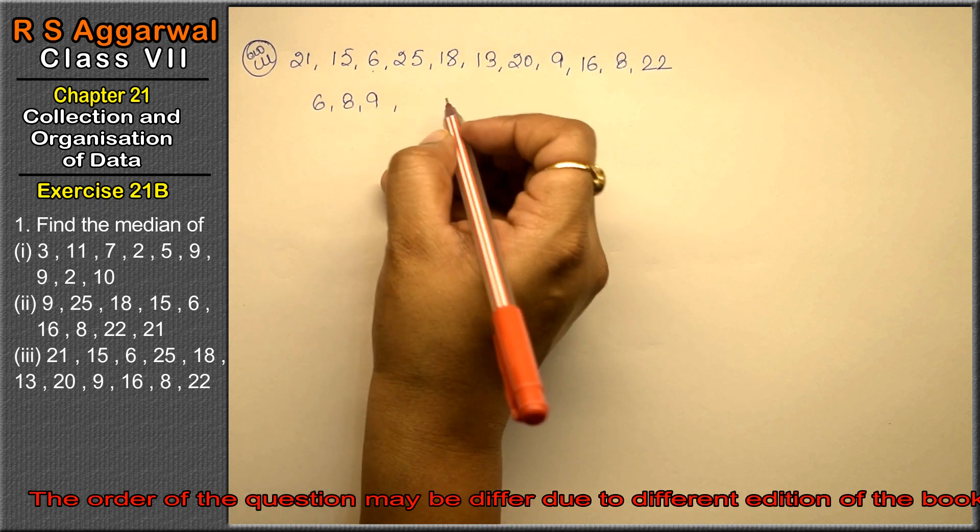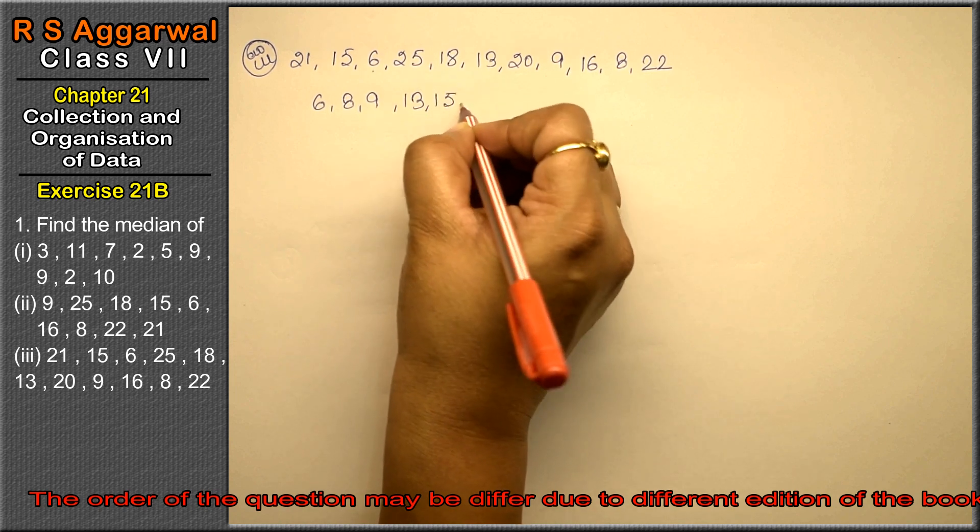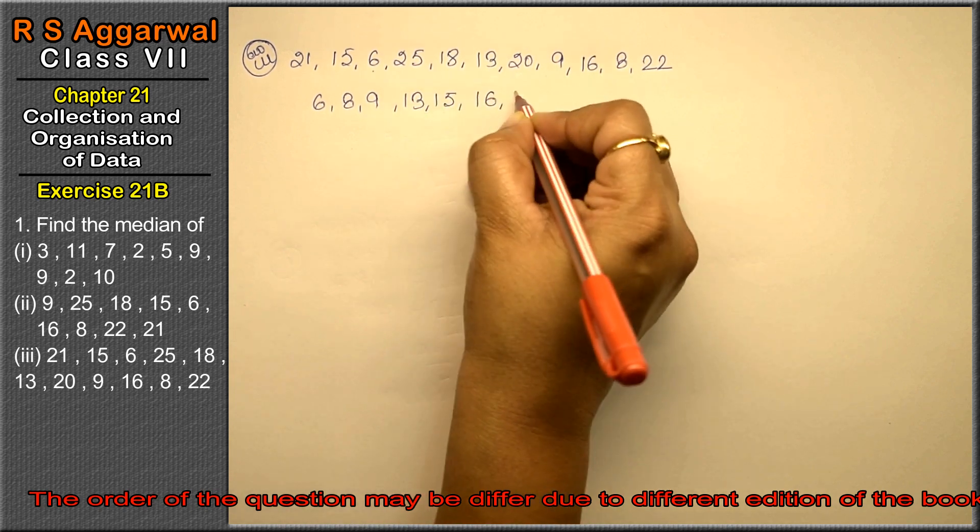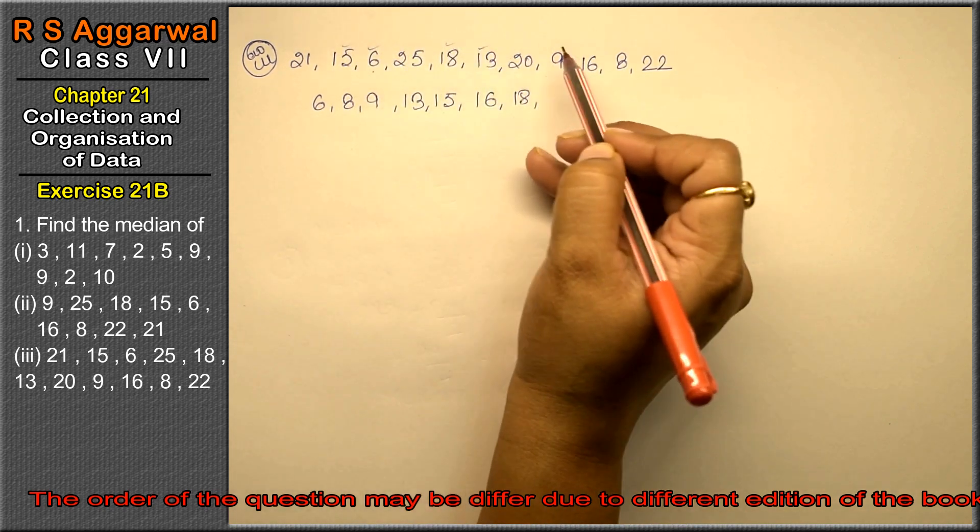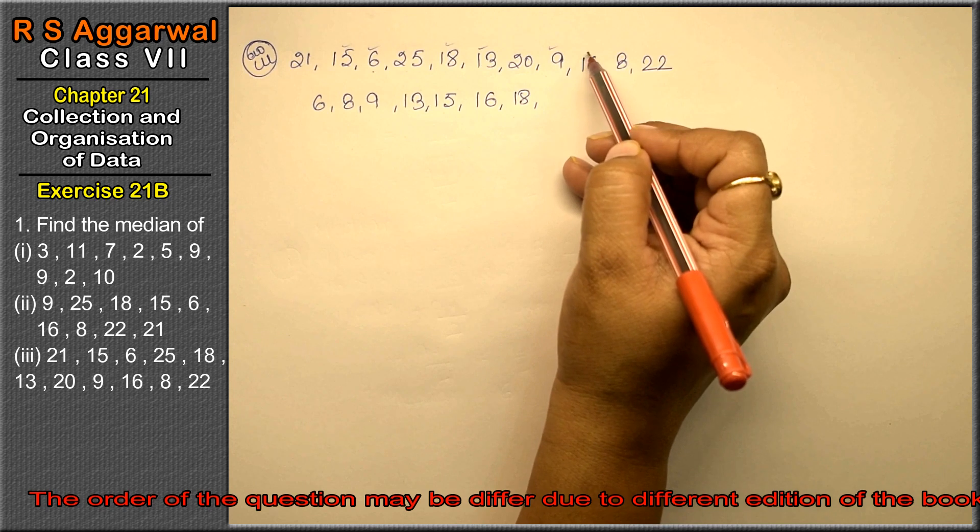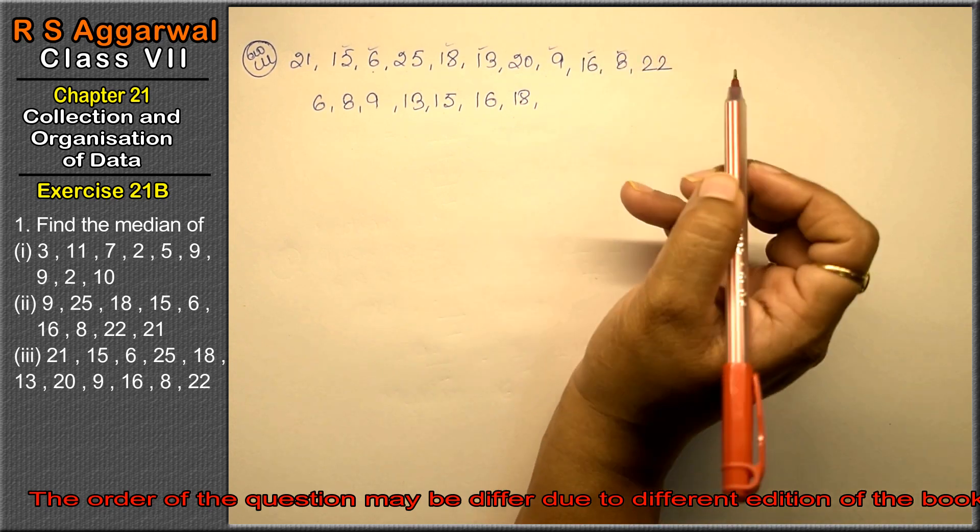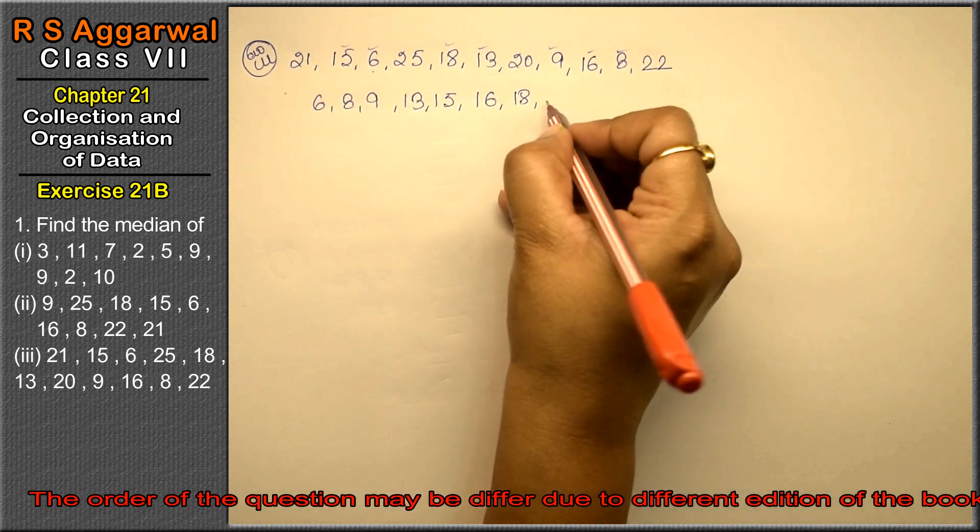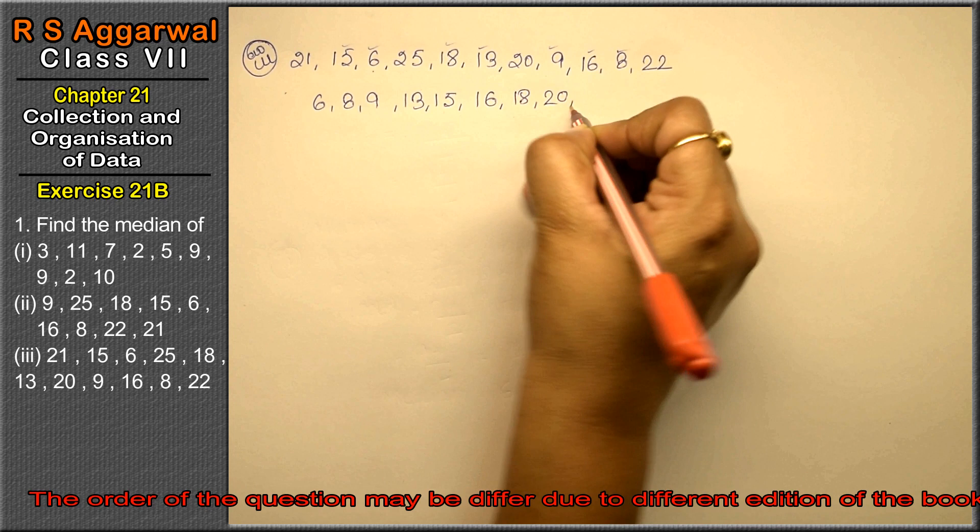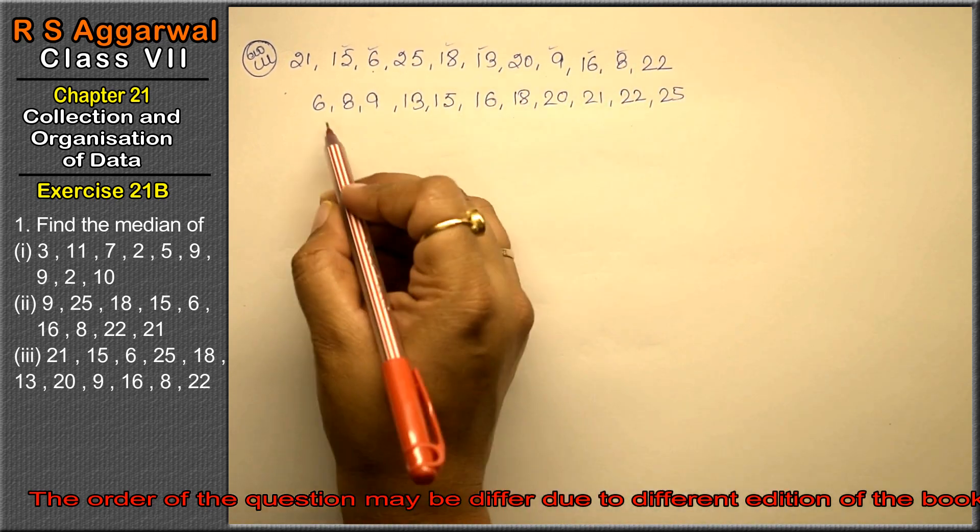6, 8, 9, 13, 15, 16, 18, 20, then 21, then 22, and 25.